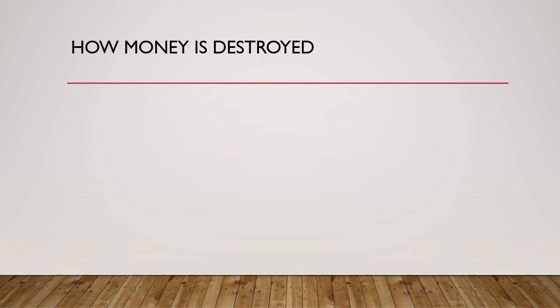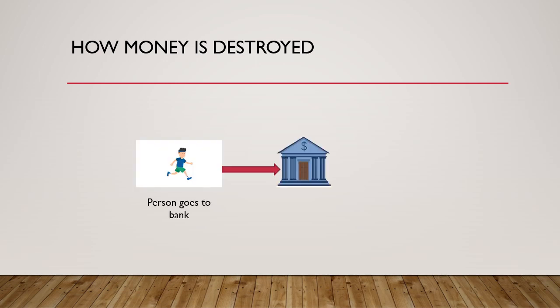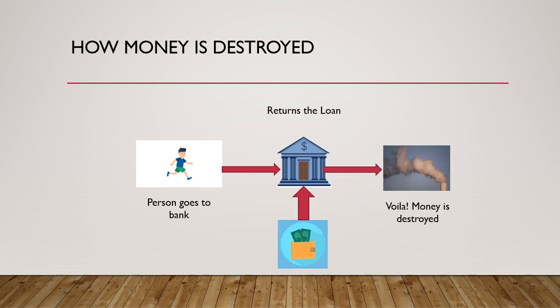How is money destroyed? The person who took the loan goes back to the bank and returns it. The bank then writes off the loan, and voilà — the money is destroyed, as simply as it was created, with just a few keystrokes.